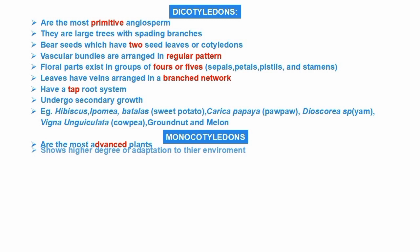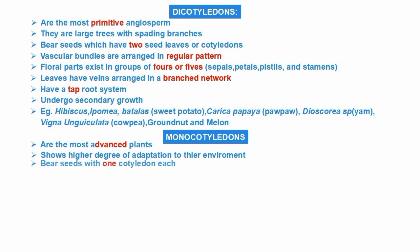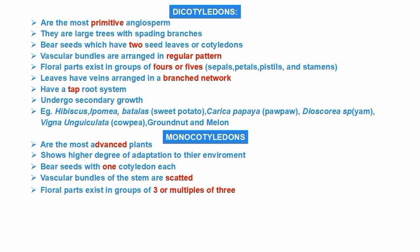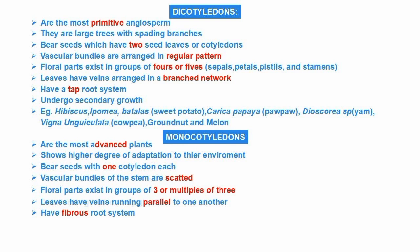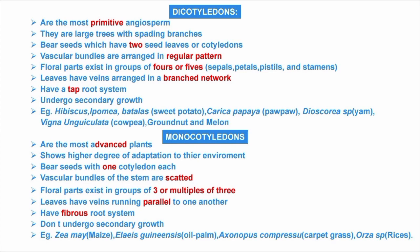Monocotyledons are the most advanced plants — with a high degree of adaptation to their environment. They bear seeds with one cotyledon. Their vascular bundles in the stem are scattered, not in a regular pattern. Floral parts exist in groups of three or multiples of three. Leaves have veins running parallel to one another, not branched. They have a fibrous root system and do not undergo secondary growth. Examples include maize, onions, and oil palm.